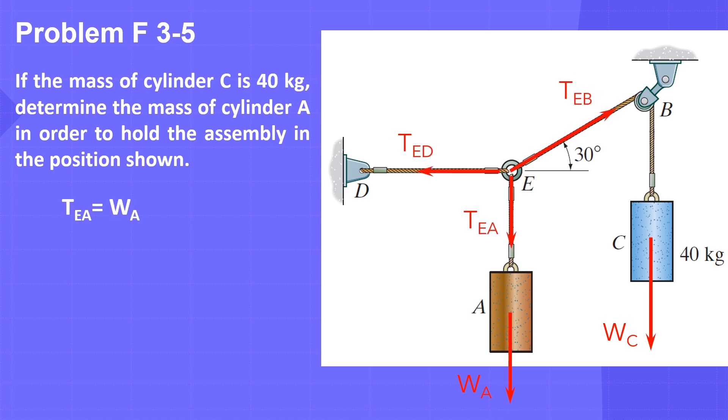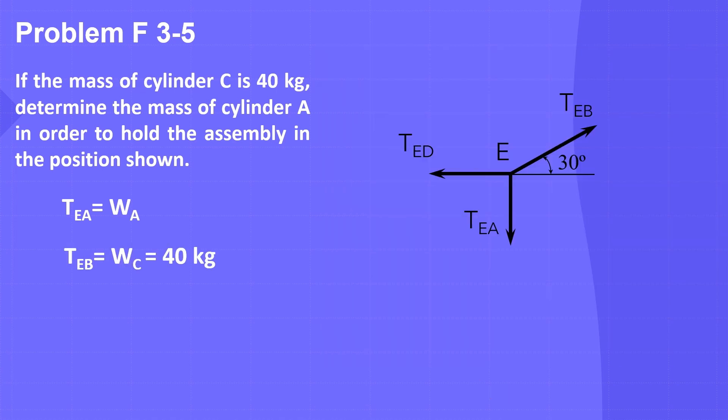The tension in chord EA equals the weight of cylinder A, while the tension in chord EB equals the weight of cylinder C. Accordingly, the free-body diagram of point E will be like this.